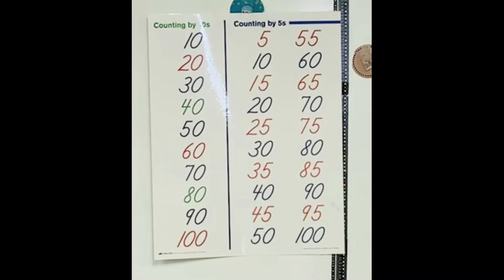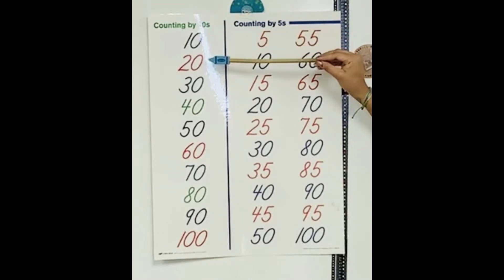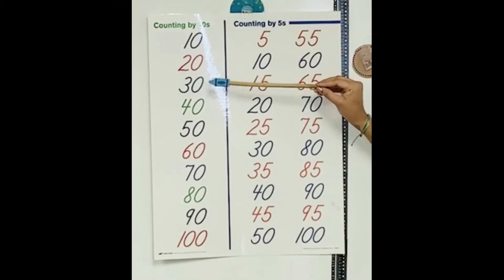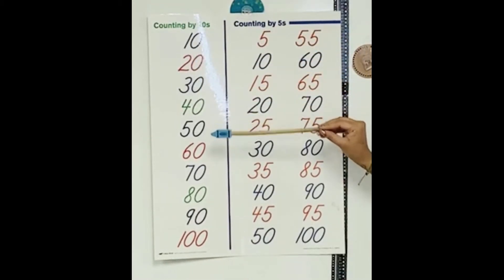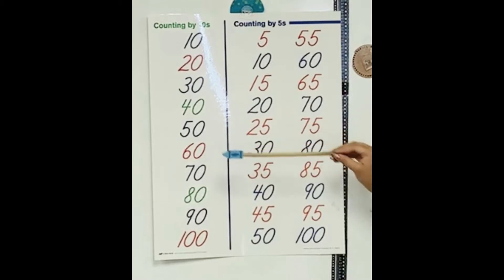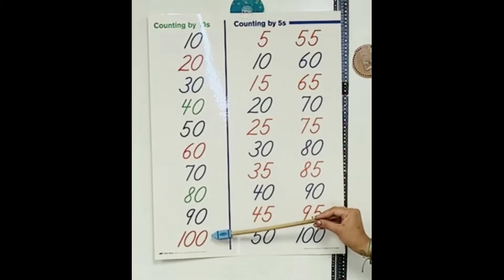Now, counting by tens from ten to one hundred. Together boys and girls. Ten, twenty, thirty, forty, fifty, sixty, seventy, eighty, ninety, one hundred.